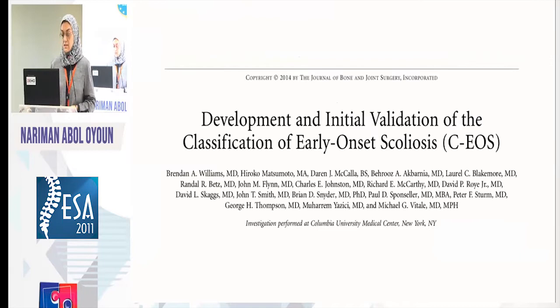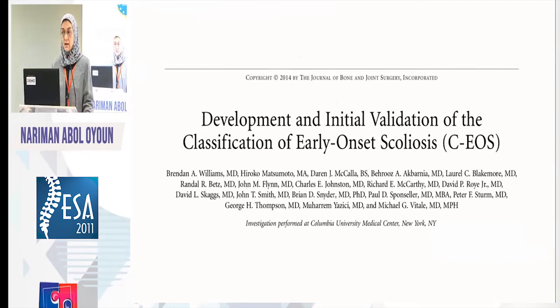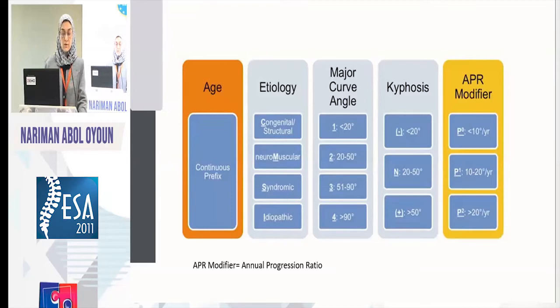This paper was published in 2014 by a great group of pediatric spine surgeons who set up a classification system for early onset scoliosis, and they managed to do so in 2014. This paper is the baseline of this lecture. First of all, we see the age on the left side, and then the etiology going from above downward.